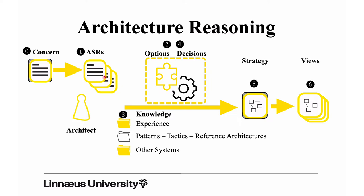The architect will pick up an ASR, start looking for options. Options will be part of the knowledge base architects use, and it contains the experience of the architects, but also patterns, tactics, reference architectures that we have looked at in previous themes, and also other similar systems. From this knowledge base the architect will select a couple of options and then make decisions.